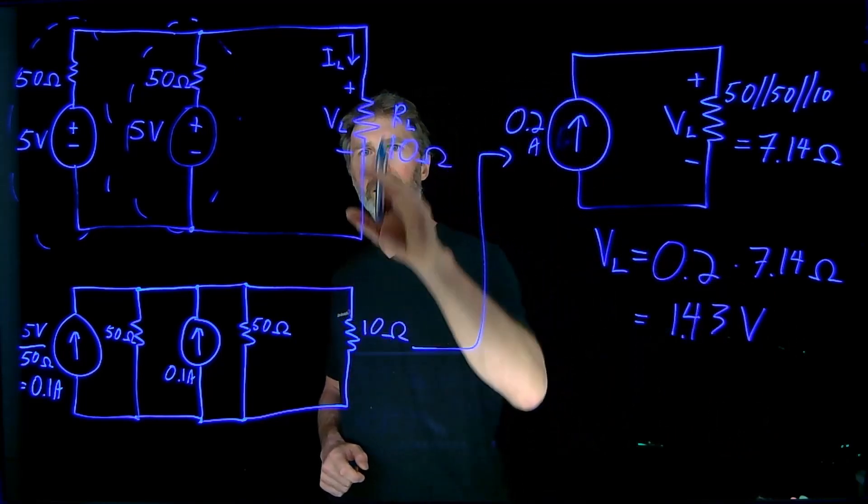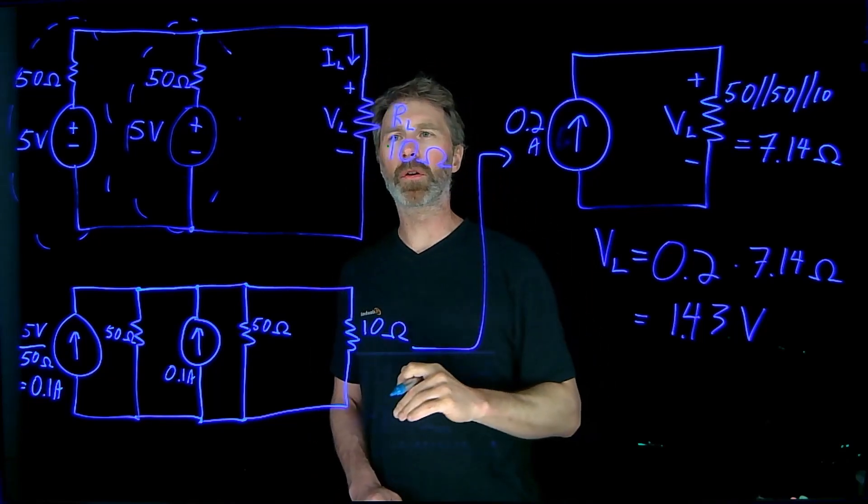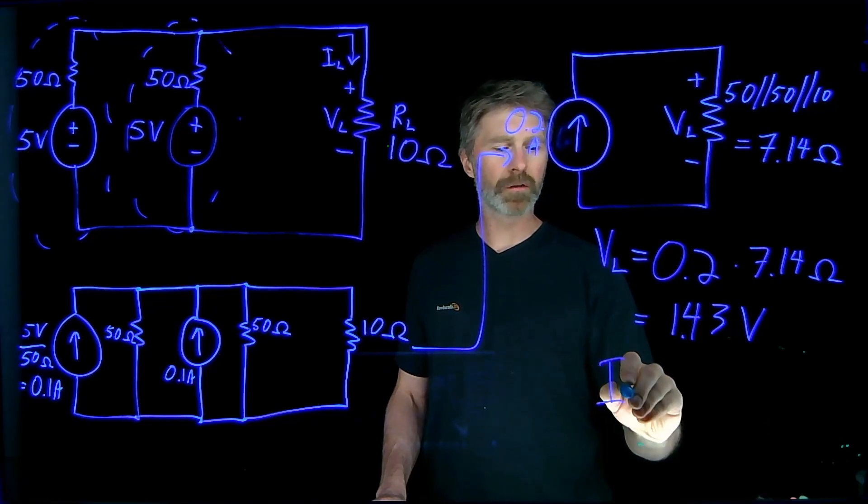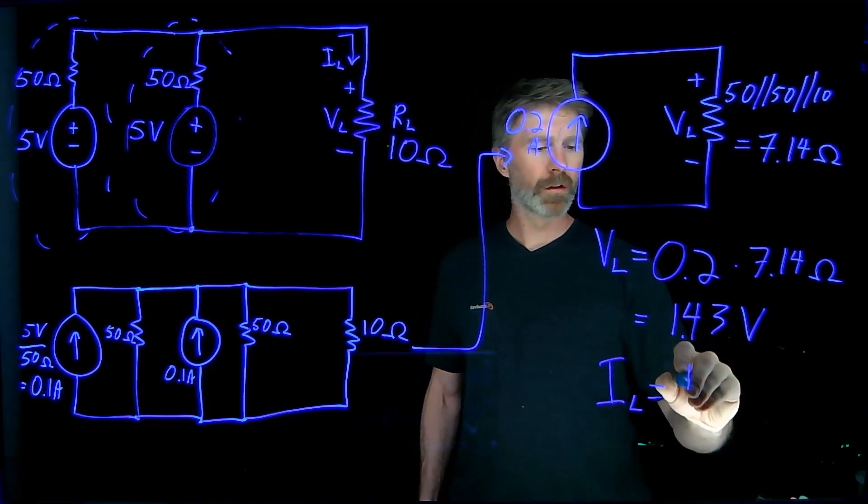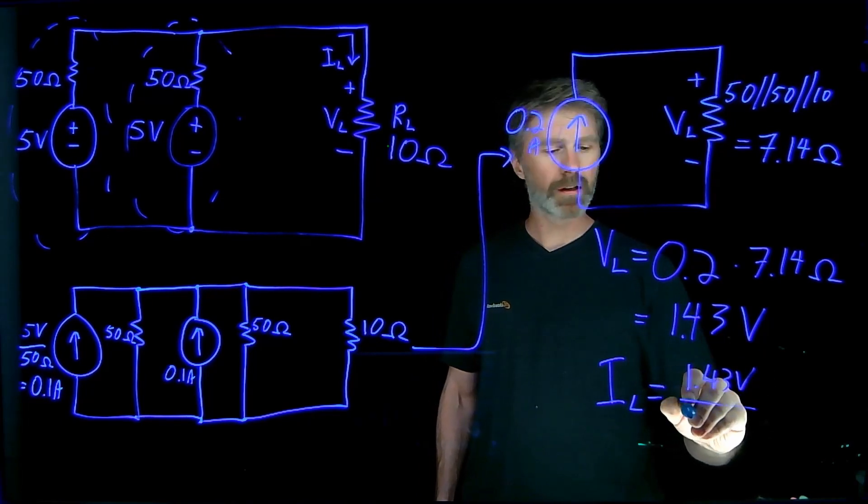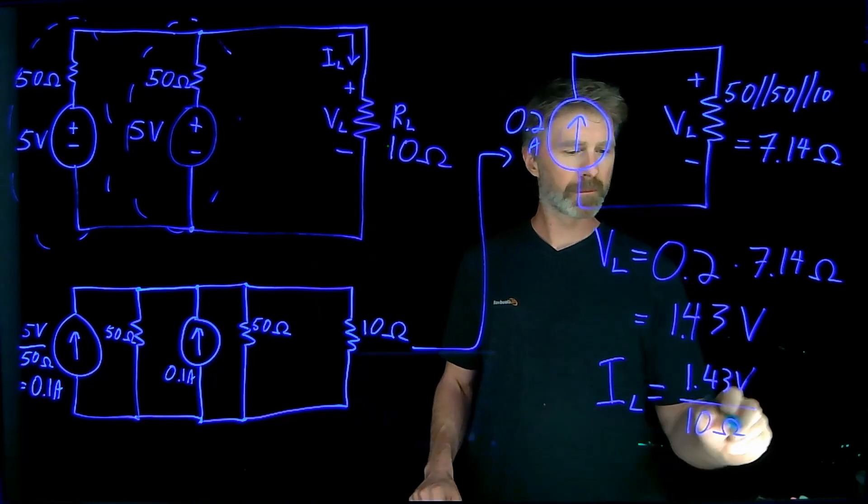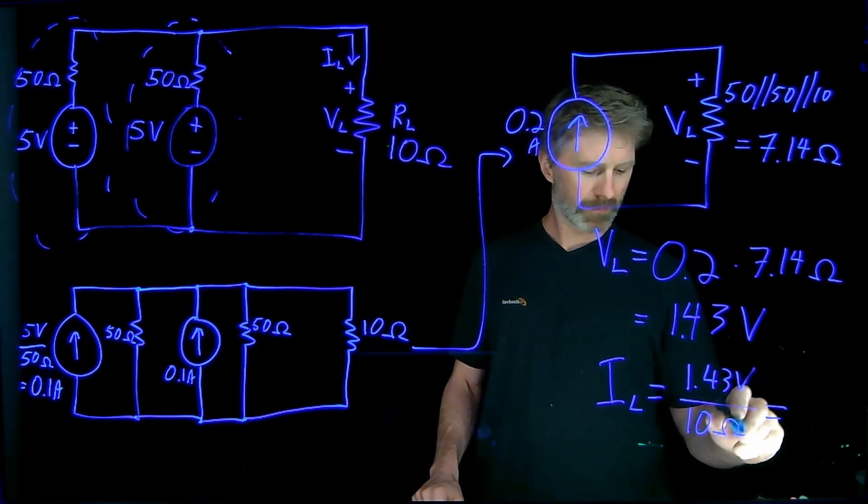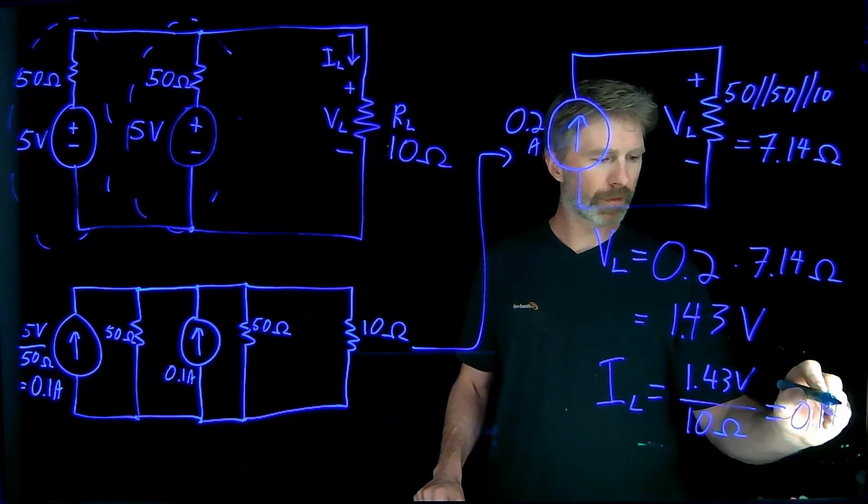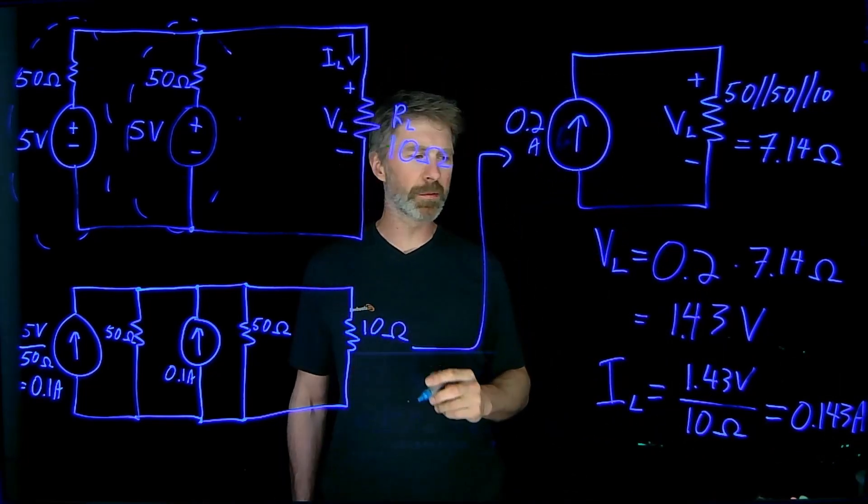And so going back to the original circuit, we've now figured out that we have 1.43 volts across the load. Very easy now to figure out what the current is through that load. 1.43 volts across the resistor, it's a 10 ohm resistor, and that gives me 0.143 amps. So 0.143 amps is going to be going through the load.